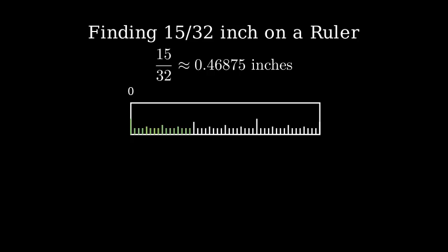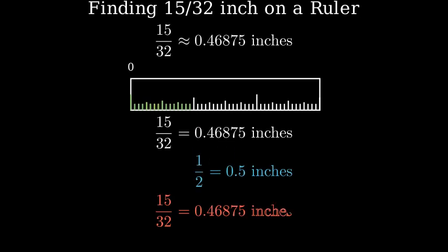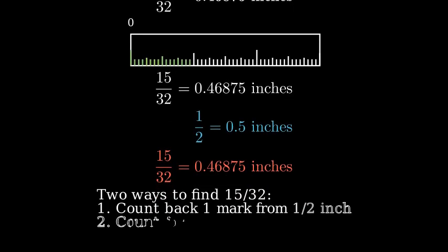So, 15/32nds of an inch is approximately 0.46875 inches. You can see this is slightly less than 1/2 inch, which would be 0.5 inches. Remember, you can find 15/32nds either by counting back 1 mark from 1/2 inch.